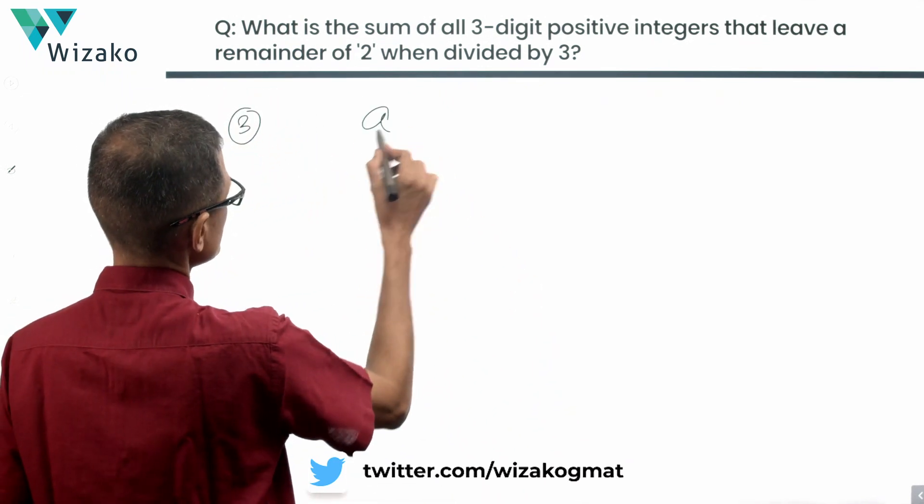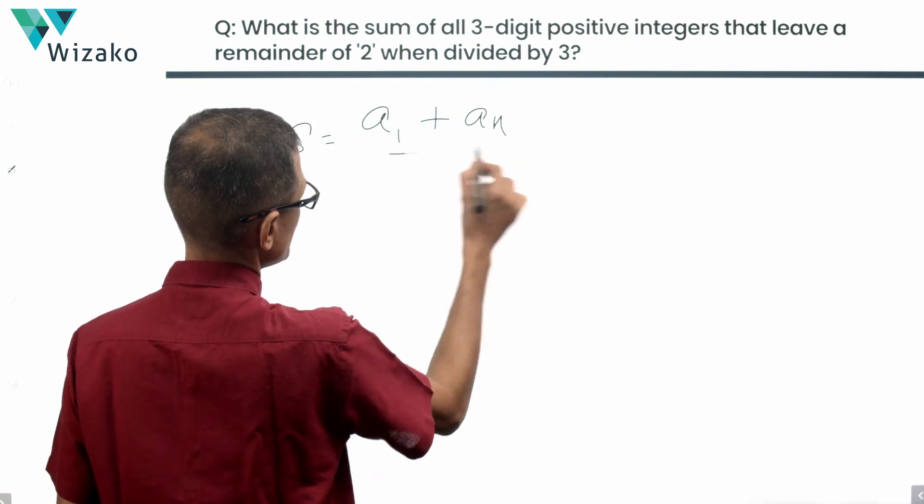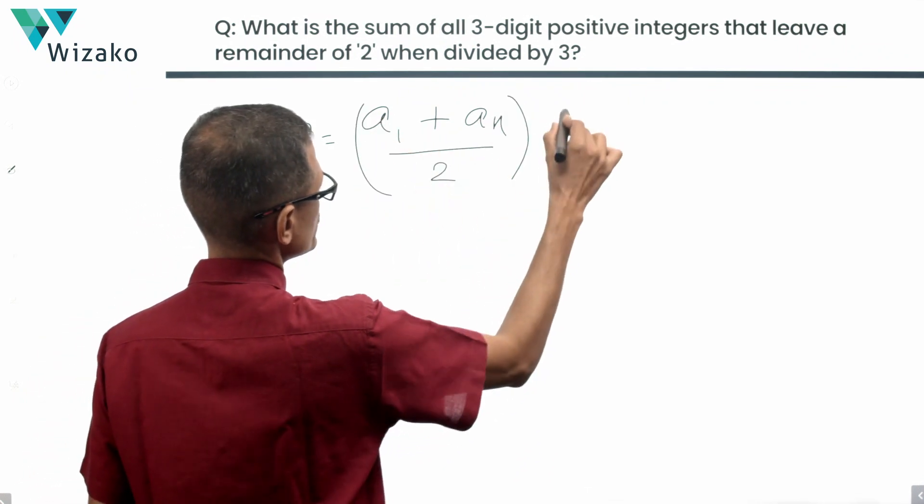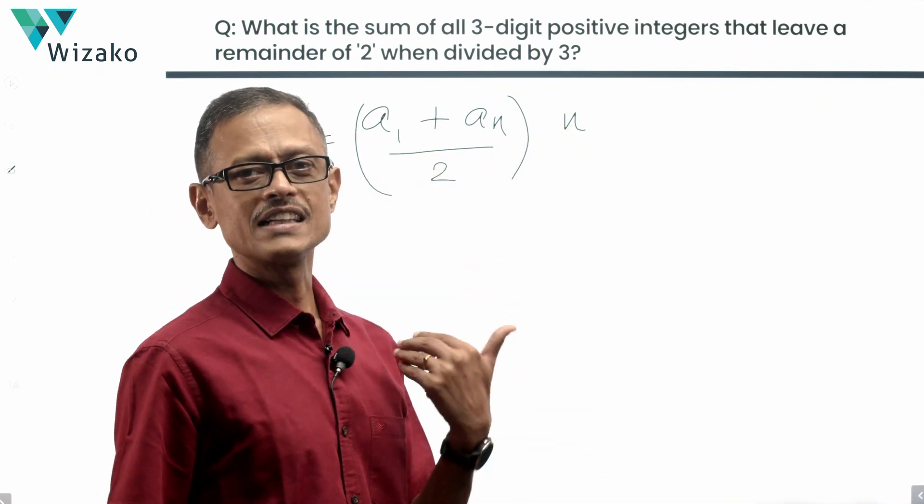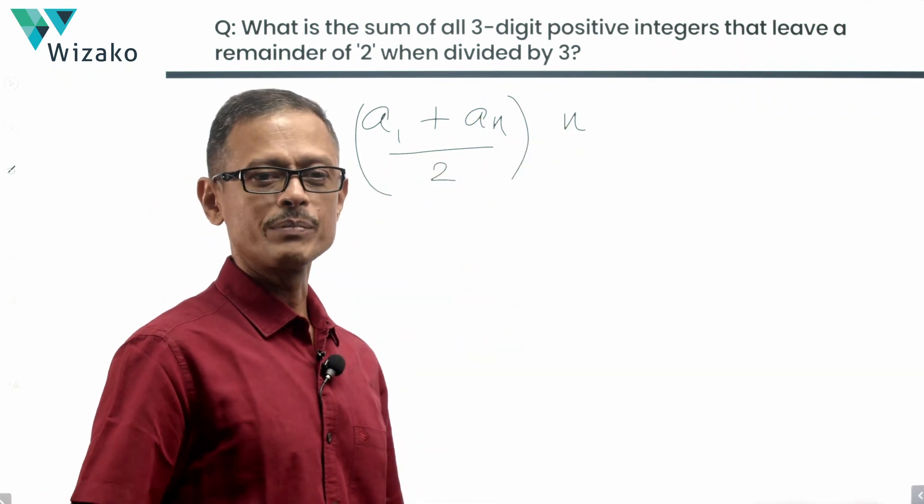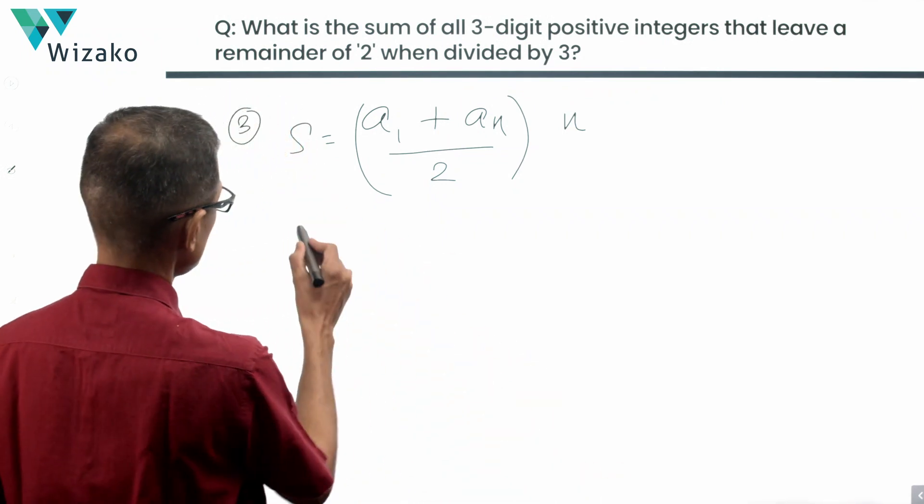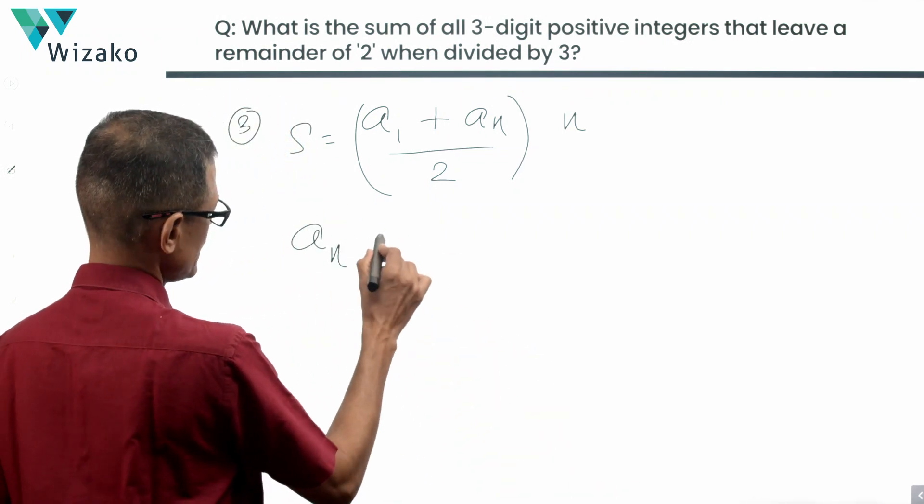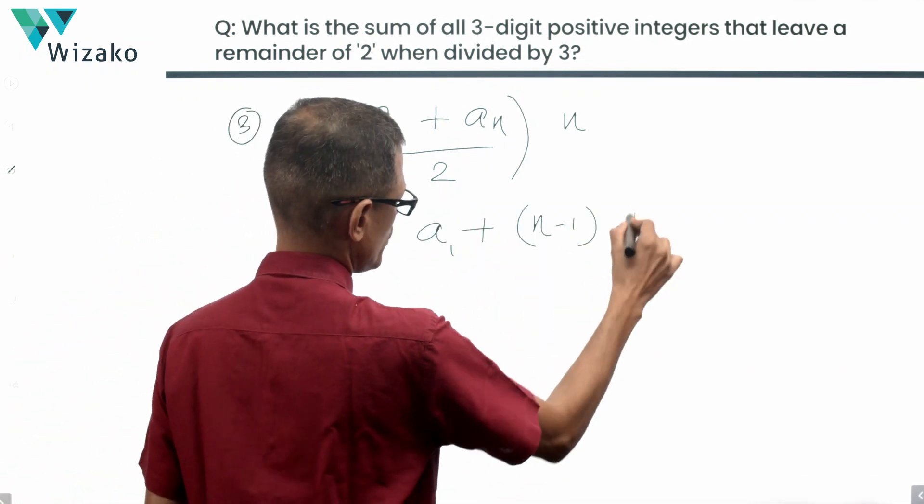We'll find out what that is. The sum of the sequence is equal to a1 plus an divided by 2 into the number of terms. This is known: 101. This is known: 998. What is not known is the number of terms. So in step 3, I'm going to compute the number of terms in the sequence. How? Going to fall back on the nth term formula for an arithmetic progression. An is equal to the first term plus n minus 1 times the common difference.